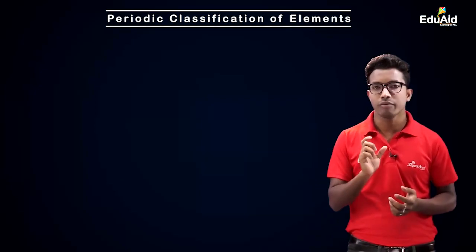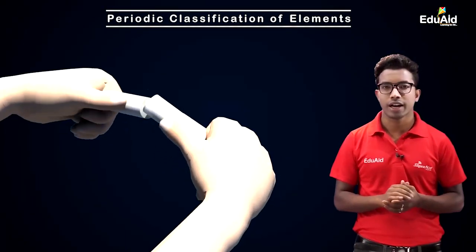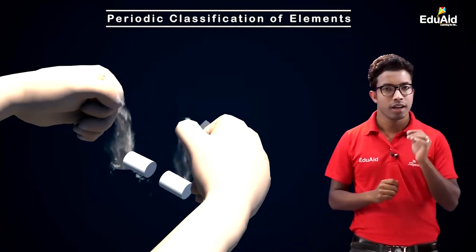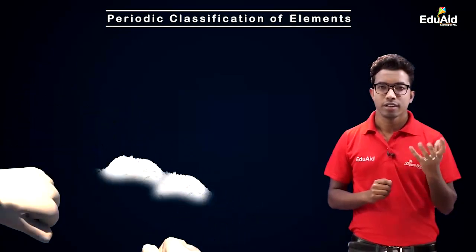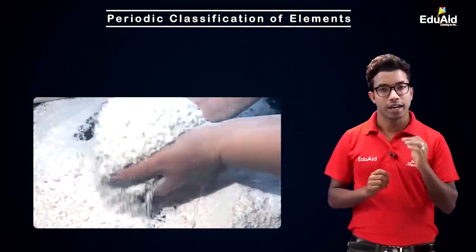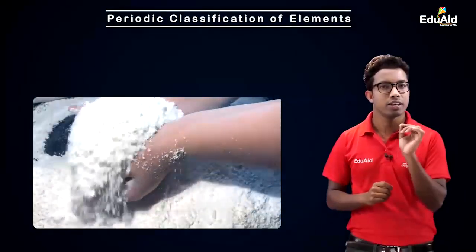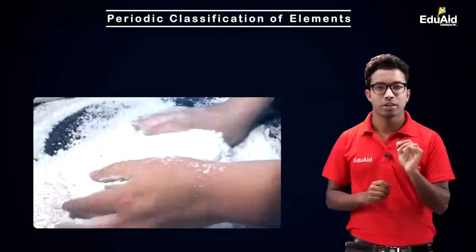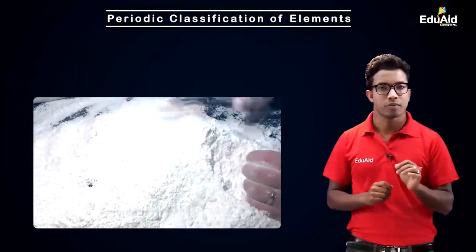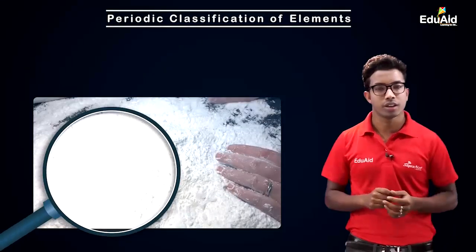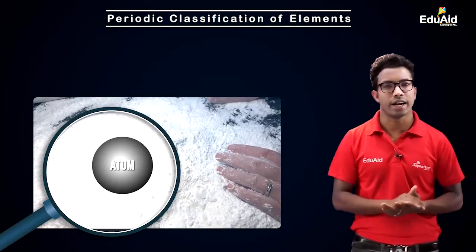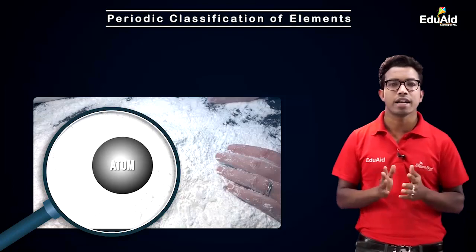So let's understand the atom first. An atom is the smallest constituent of any matter. For example, if I break a piece of chalk I will get two pieces; if I keep breaking those pieces I will get a powder-like substance; and if I take a particle from that powder and keep breaking it, finally a stage will be reached where that particle is not breakable further. That smallest stage, which we cannot see with our naked eye, is called the atom.